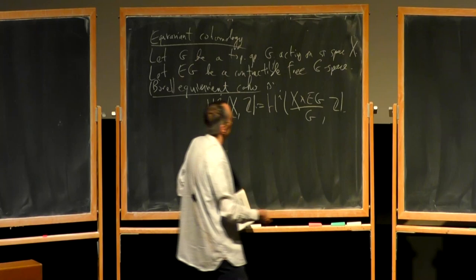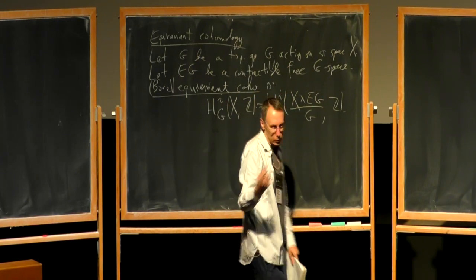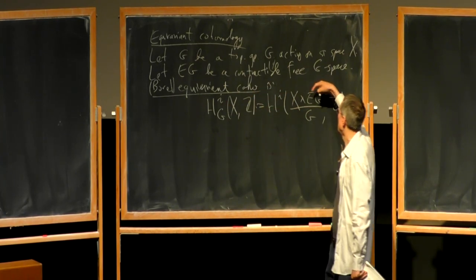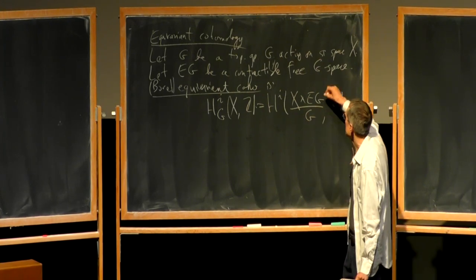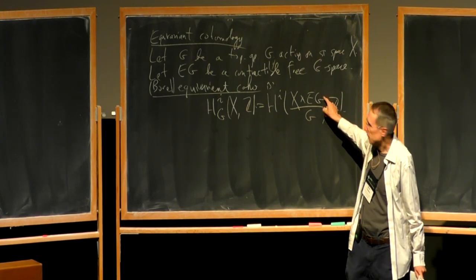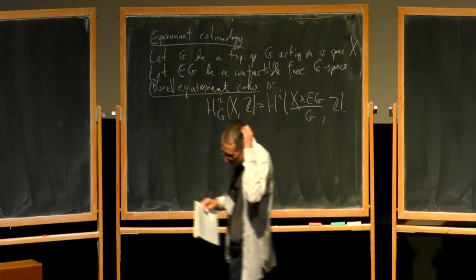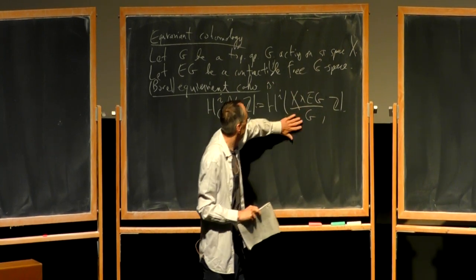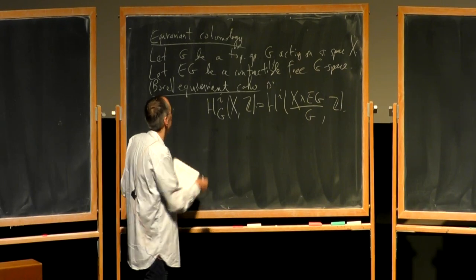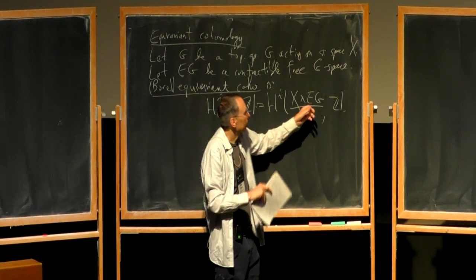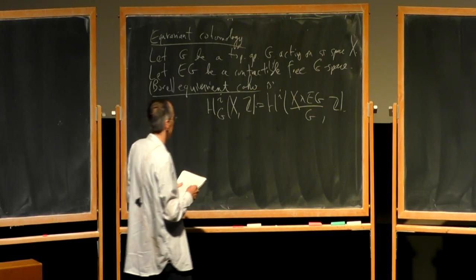The thing to realize about this space is that G is acting both on X and on EG, acting diagonally. But the action is free because the action is free on EG, no matter how it's acting on X. So this is the quotient by a free G-action. In particular, because equivariant cohomology is the cohomology of some space, it is a ring, because the cohomology of any space is a ring.